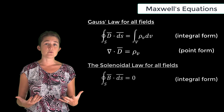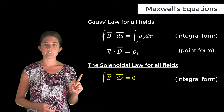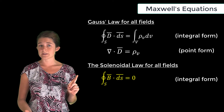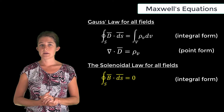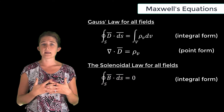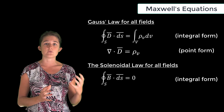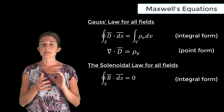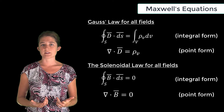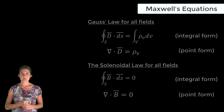The solenoidal law, for static or time-varying fields, states that the integral over a closed surface of B dot ds — the total magnetic flux through a closed surface — equals zero. The reason is that there are no magnetic monopoles, so any closed surface necessarily contains exactly the same number of north poles as south poles, leading to zero net magnetic charge. In point form, the divergence of B equals zero.